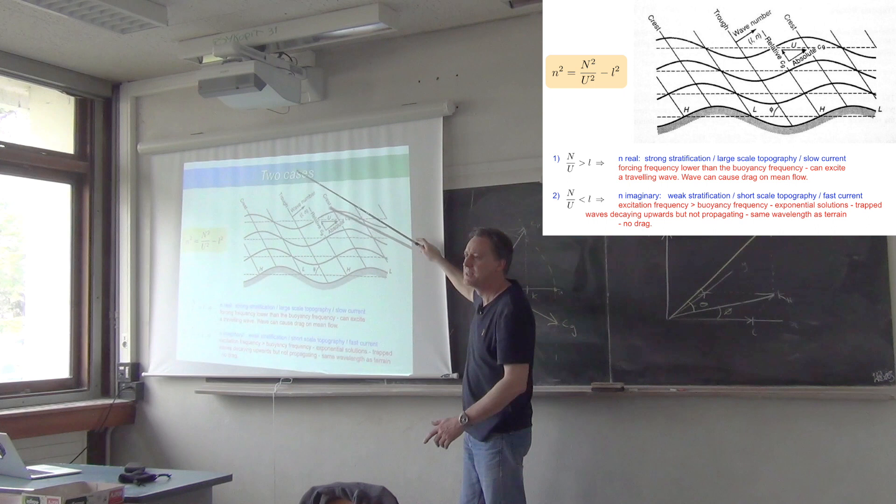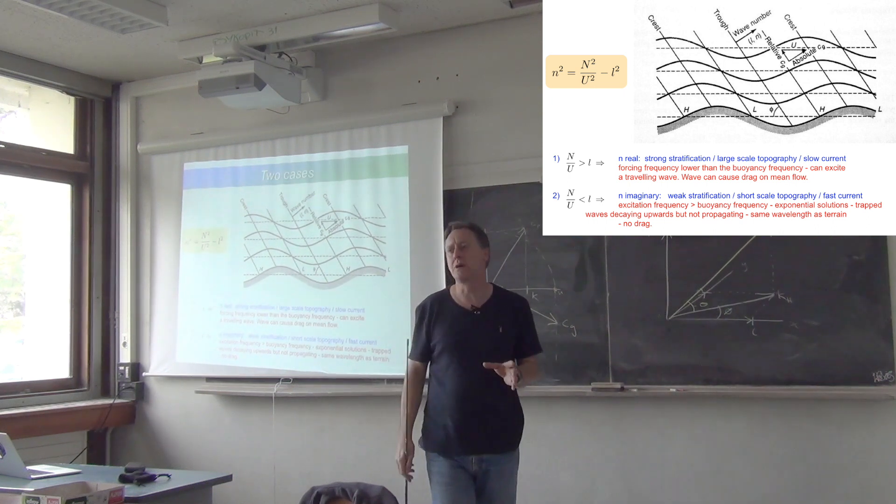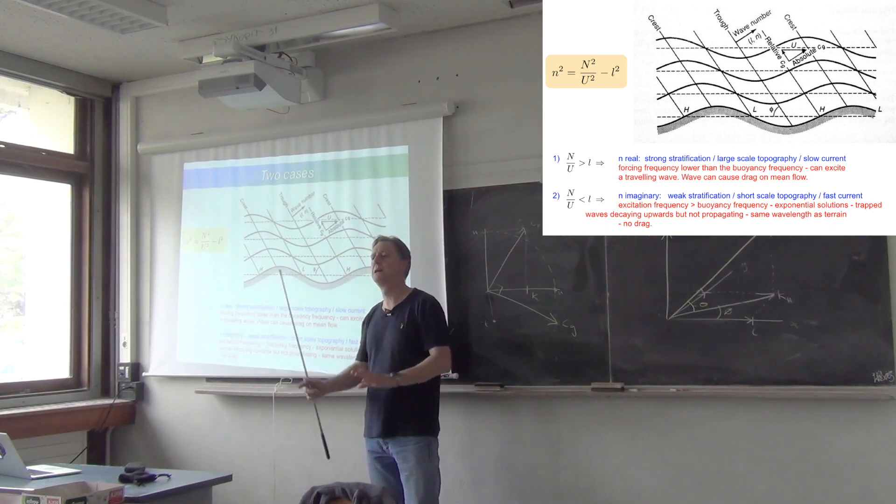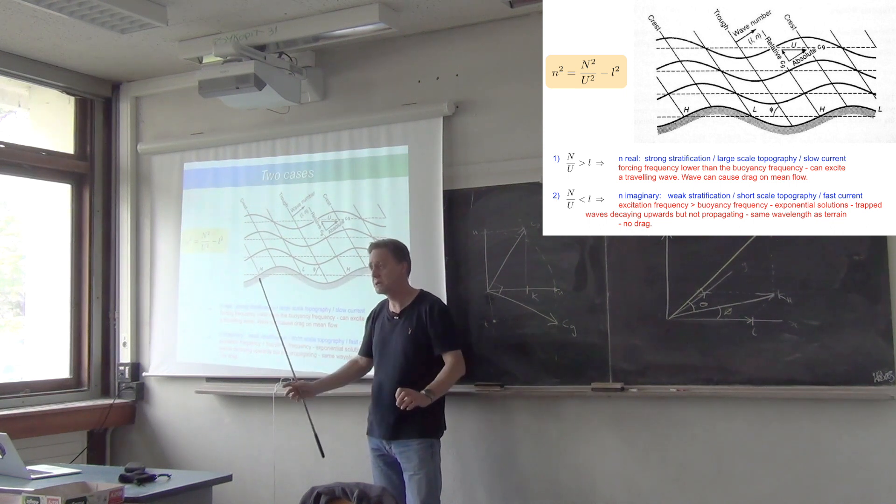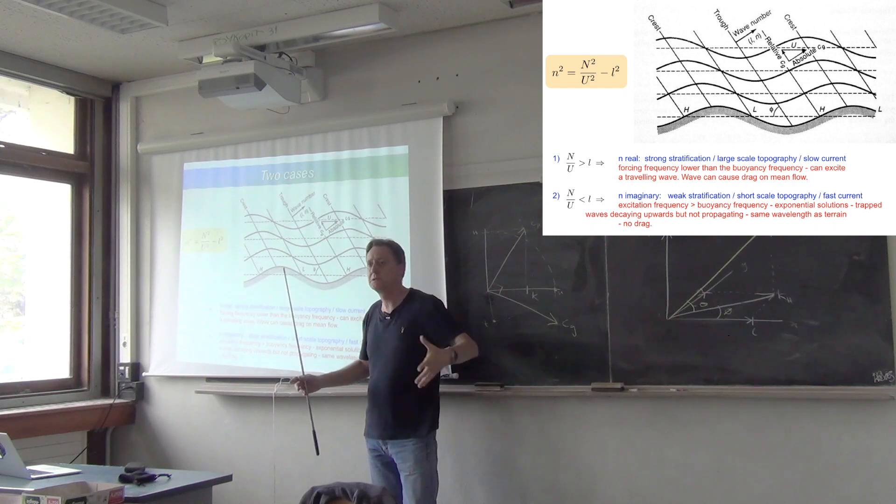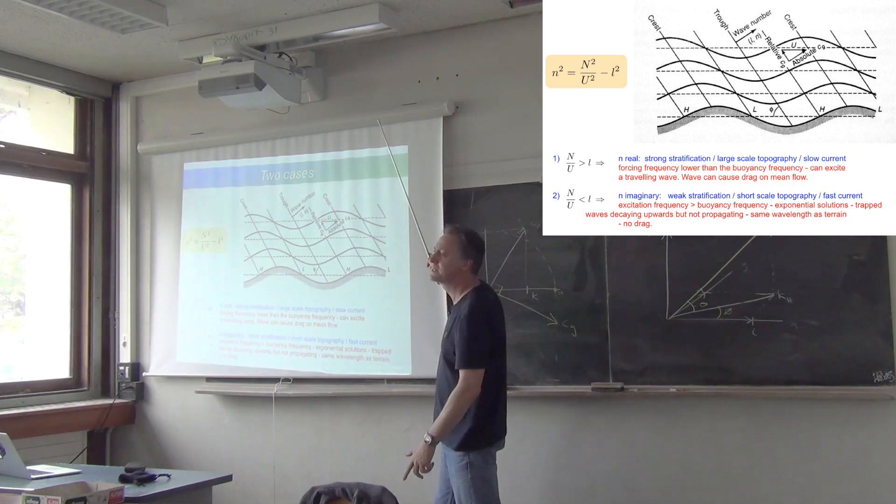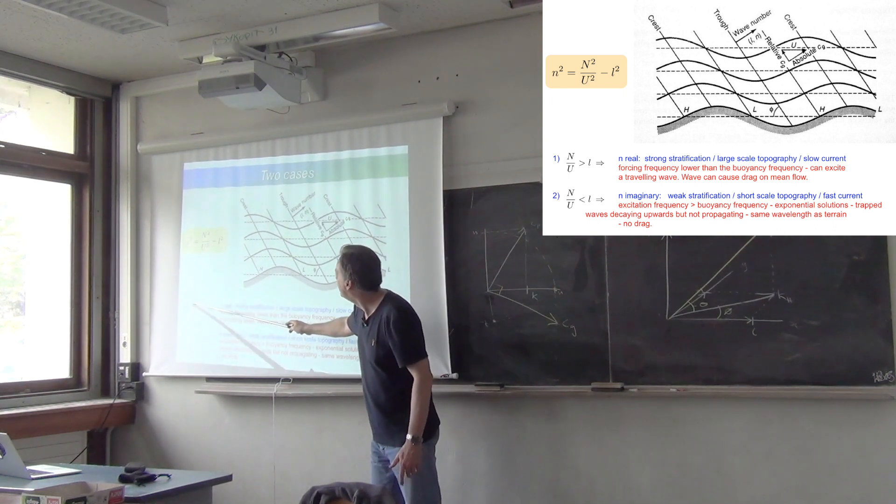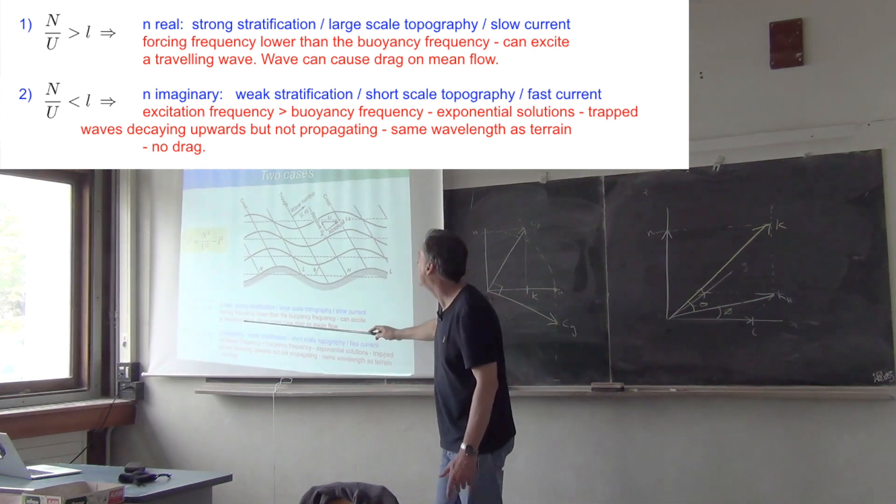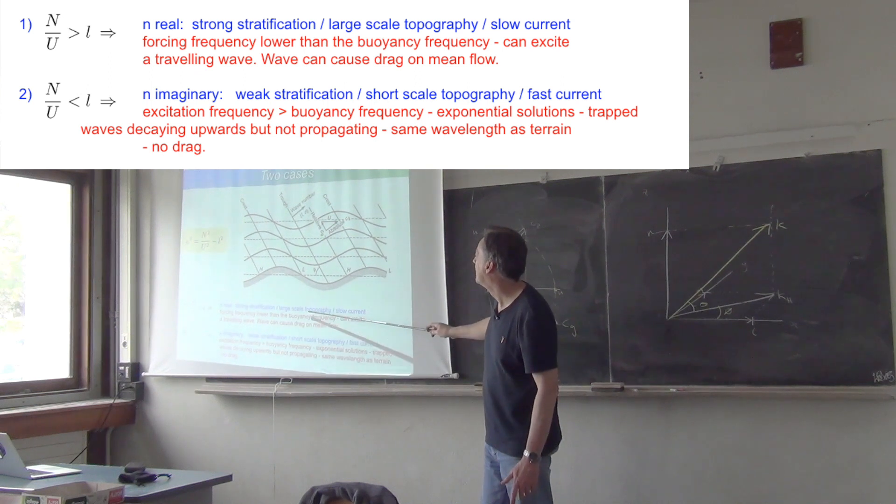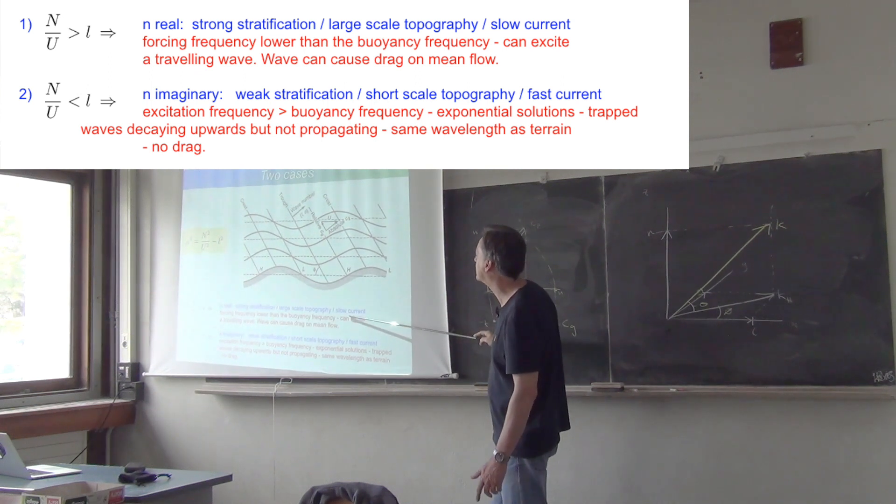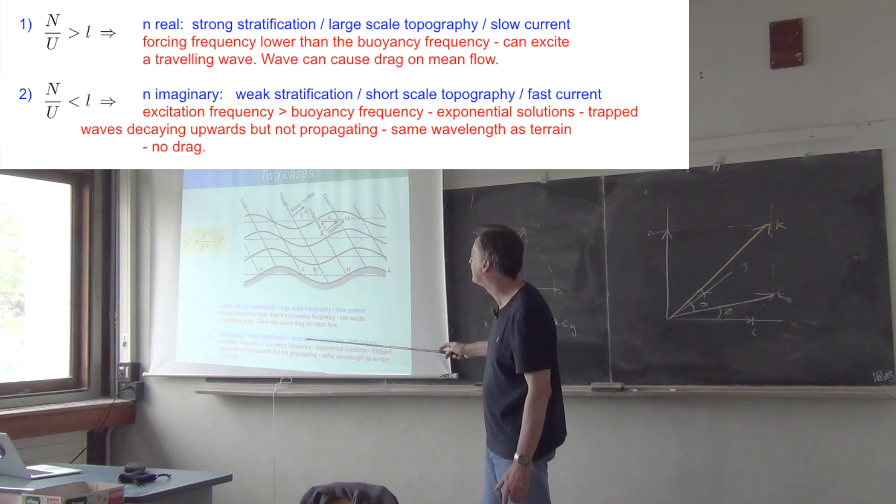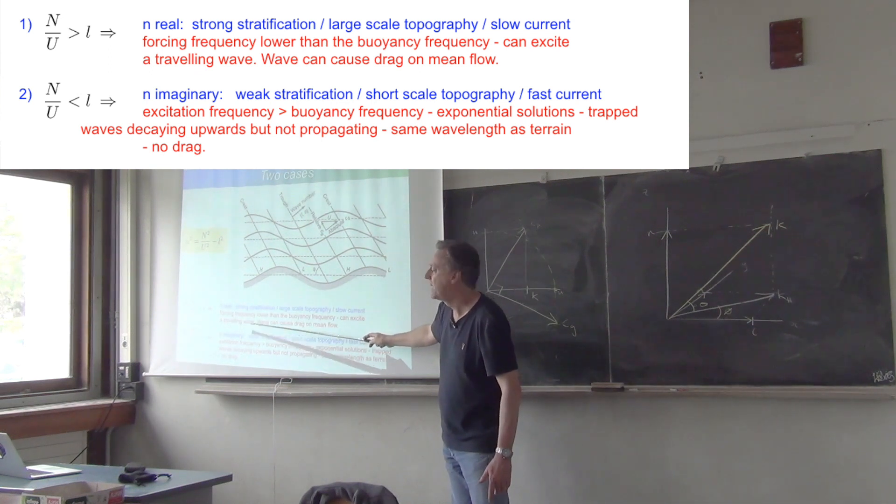This is important because if you remember we were talking about Stommel gyres, for example, and the idea was that there was friction with the bottom which was retarding the circulation. How does friction at the bottom communicate with the rest of the ocean? Well, it could communicate with internal waves, but only if they are free to propagate vertically, which means that little n has to be real, which means that N over U is greater than L. In that case, either you have a strong stratification or your topography is fairly large scale or your current is not too fast, and so the forcing frequency is lower than the buoyancy frequency and you can have a traveling wave.